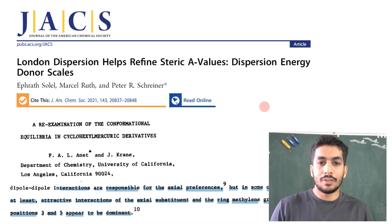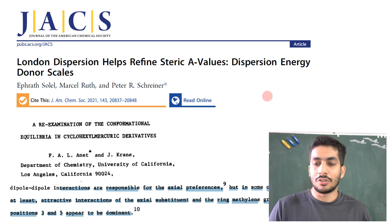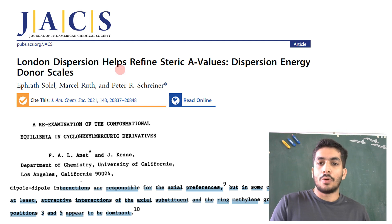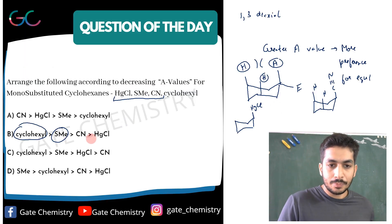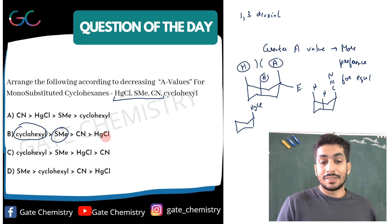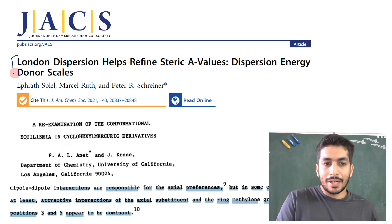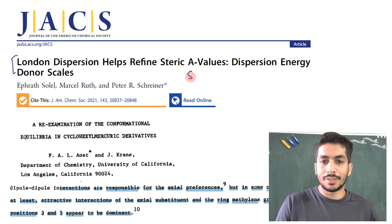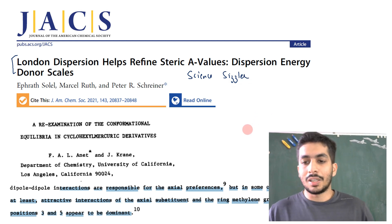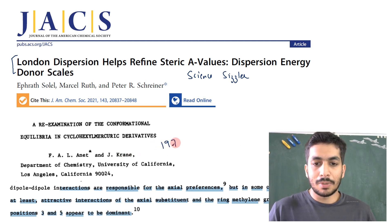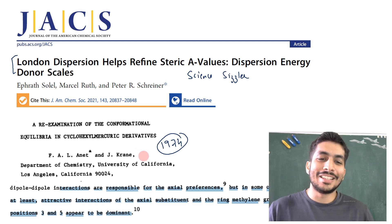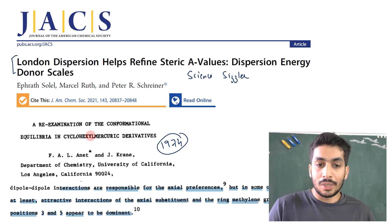A very recent 2021 article published in the Journal of the American Chemical Society — one of the most prestigious chemistry journals — discussed London dispersion forces and how they help redefine A-values. Additionally, a 1974 article published in Tetrahedron Letters also addressed this topic. I'll be covering that 1974 article in my 'Science Sizzler' series, where I discuss recent and classic research articles.